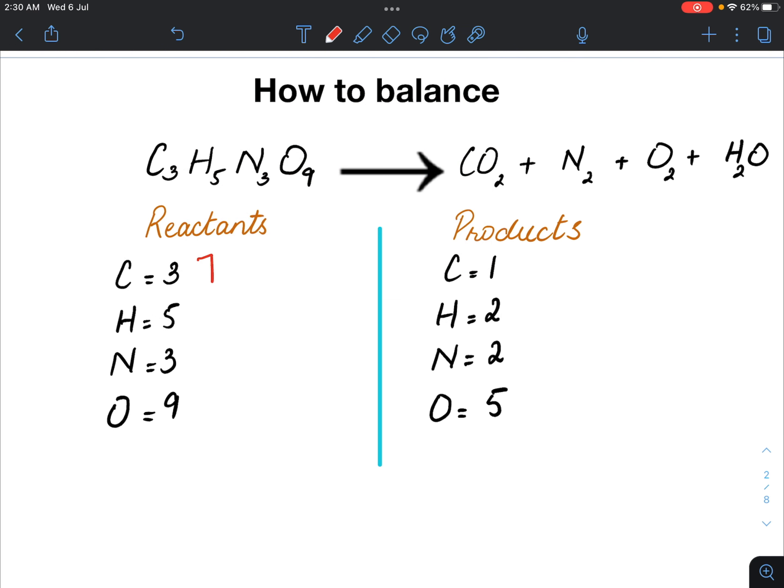Now, all the numbers on the reactant side are odd numbers and I like my numbers even. So if I put 2 as a coefficient here, it means I have to multiply all of these with 2. Let's see. 3 multiplied by 2 is 6, 5 multiplied by 2 is 10, 3 multiplied by 2 is 6 again and 9 multiplied by 2 is 18.